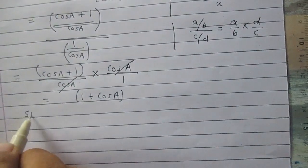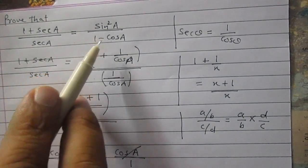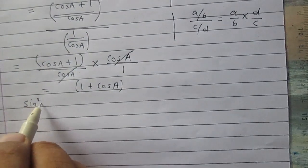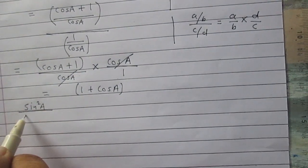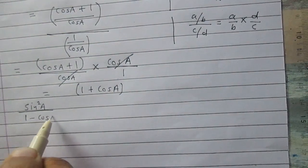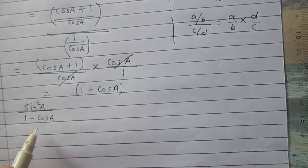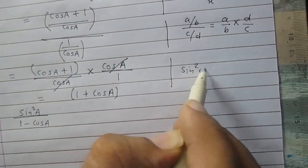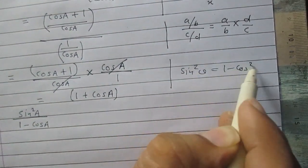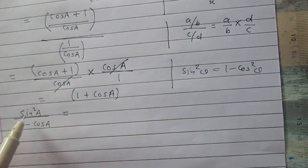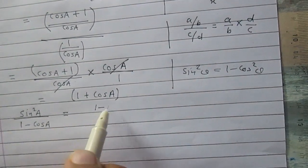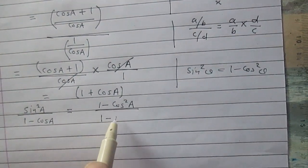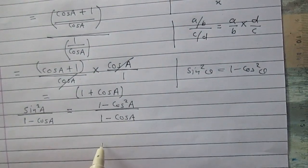The right hand side is sin squared a divided by (1 minus cos a). We know that sin squared theta equals 1 minus cos squared theta, so we can write sin squared a as 1 minus cos squared a. The denominator remains as it is: 1 minus cos a.